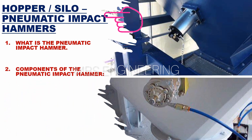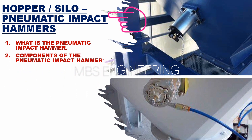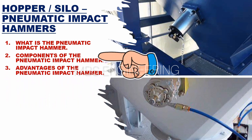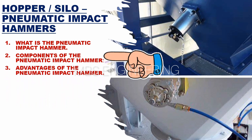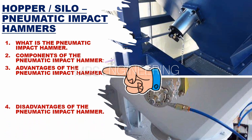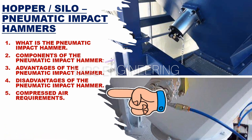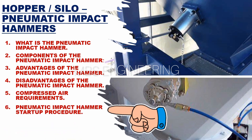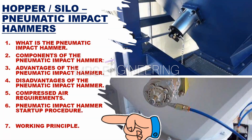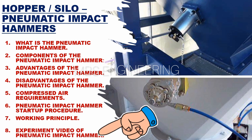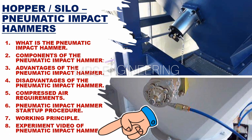We will discuss this in the detailed description given below. The first topic is what a pneumatic impact hammer is. The second topic is the components. The third is the advantages. The fourth is the disadvantages. The fifth is compressed air requirements. The sixth is the startup procedure. The seventh is the working principle. The eighth topic is the experimental video of the pneumatic impact hammer.